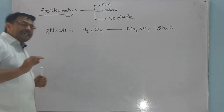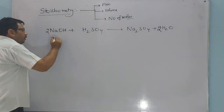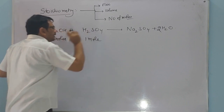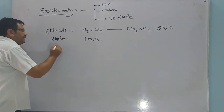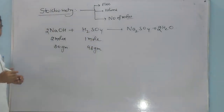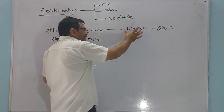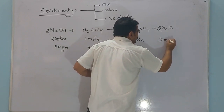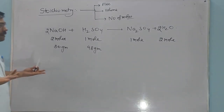अब यह chemical reaction क्या बता रही है? Number one: दो mole sodium hydroxide, एक mole H2SO4 से react करेगा। Mass में कहें तो two moles of NaOH means 80 gram of NaOH will react with 98 gram of H2SO4। जब यह completely react कर जाएंगे तो sodium sulfate का एक mole और water के दो mole बनकर तयार हो जाएंगे।